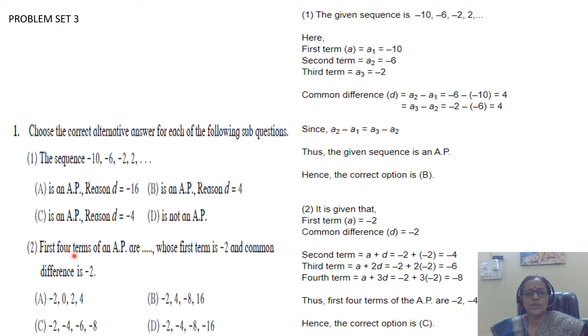Second question: Find the first four terms of an arithmetic progression whose first term is -2 and the common difference is -2. Four alternatives are given, where first term is -2. Now find where common difference is -2. First term is -2, second term is -4, third term using a + (n-1)d is -6, fourth term is -8. So your correct option is option C.